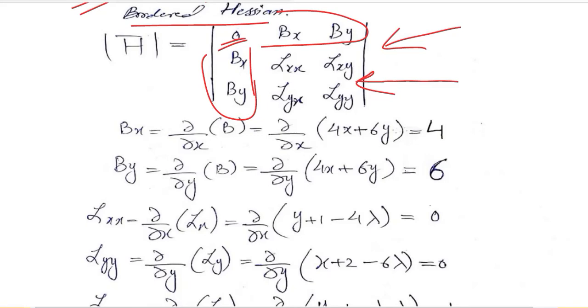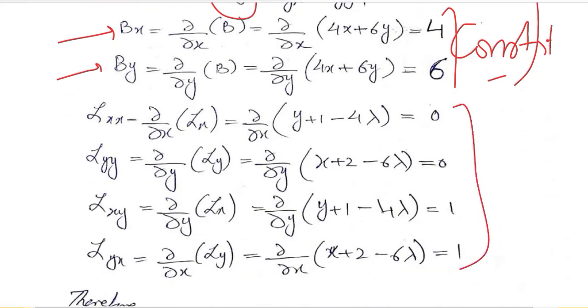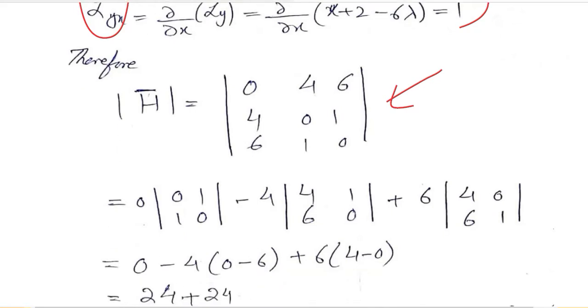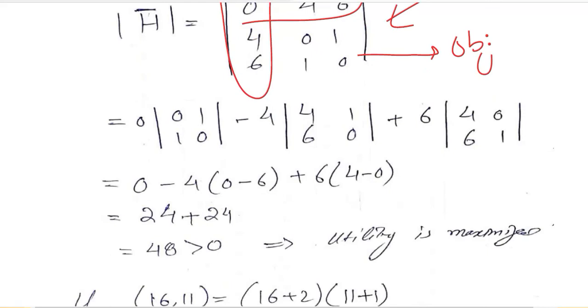This is gx and this is gy. These are the two constraint based derivatives that we need to put in this border. And the four remaining derivatives are the second order derivatives that are based on the objective function. All of these will be substituted and we will get the bordered Hessian determinant. These are the constraint based values and these are the objective based values.